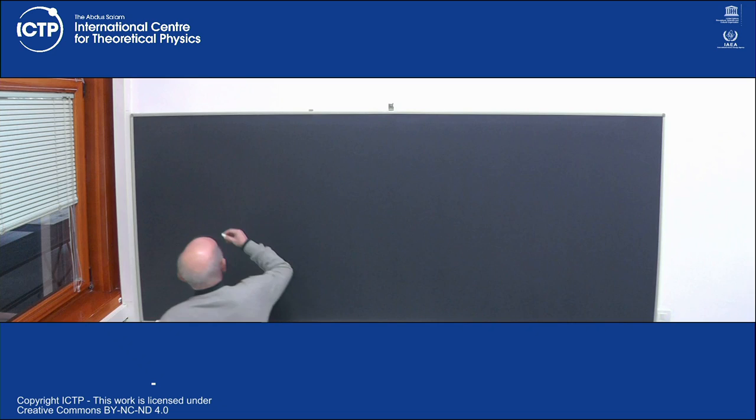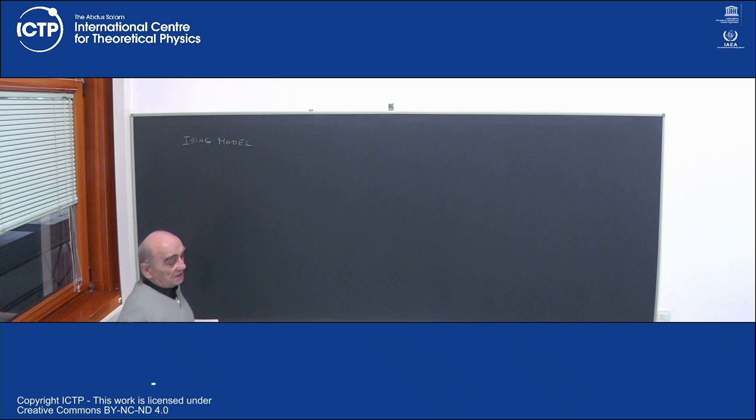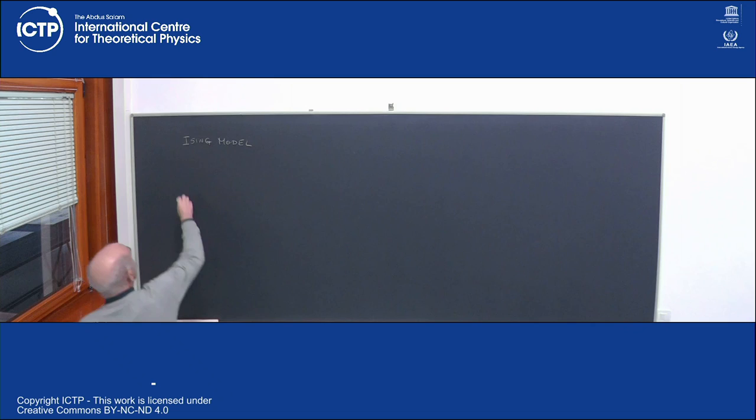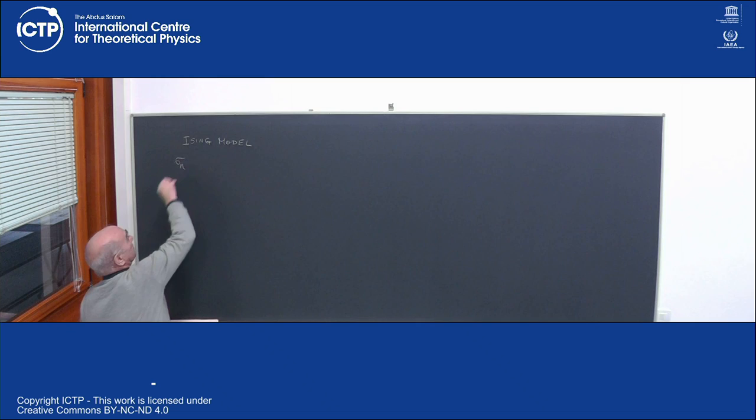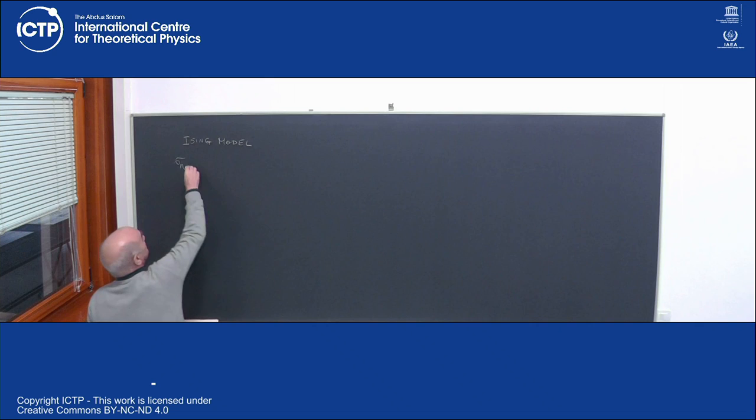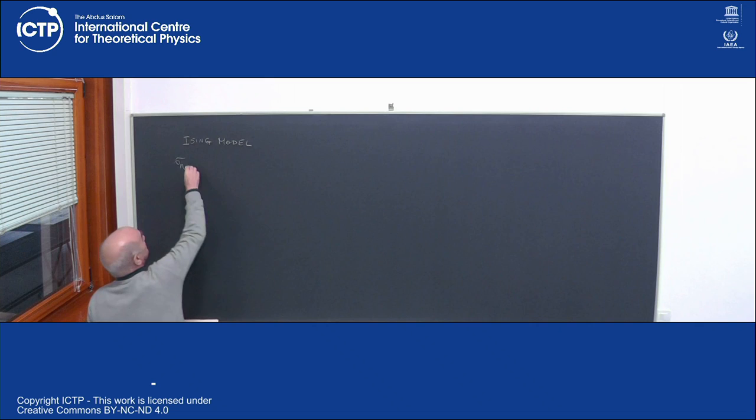The simplest model we discussed last time was the Ising model, which deals with very simple degrees of freedom: scalar quantities taking only two values, plus or minus one. You introduce a lattice of size N, and sigma_n is a variable associated with each site, allowed to take only two values, plus or minus one.